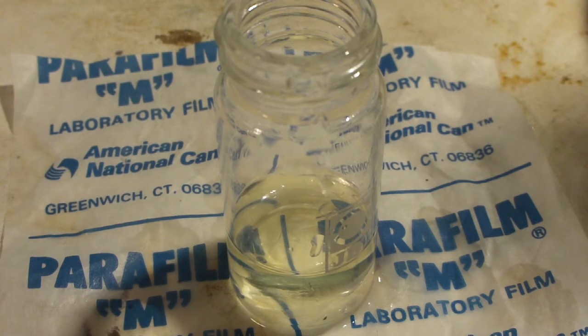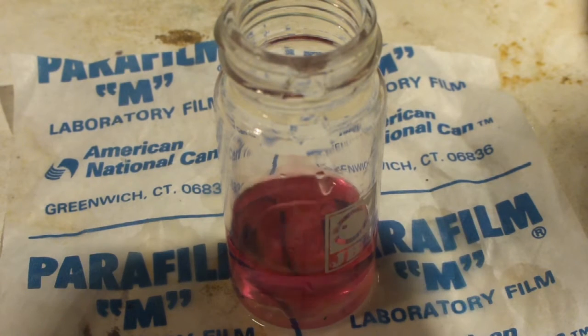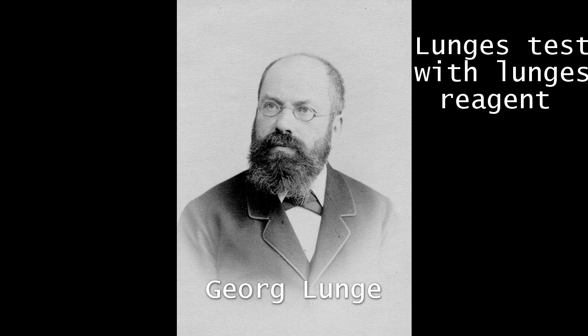In this video, we are going to perform two simple tests to detect nitrite and nitrate ions in solution. The test for nitrite is called Lunges test and is conducted with Lunges reagent. This reaction uses an azoic coupling. We used this test in our last video, where we synthesized nitric acid from ammonia.